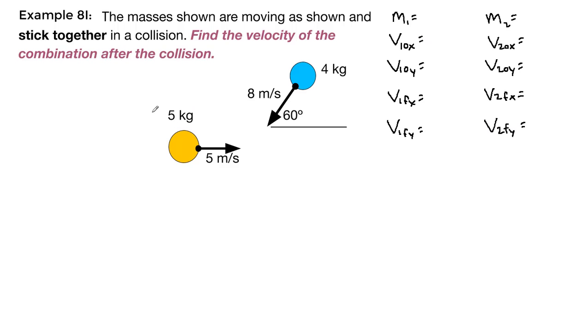So the first mass that I saw here was the 5 kg block, so we'll go with that. It is moving directly to the right, which means all of that 5 meters per second is sideways at the beginning, and none of it is up and down.